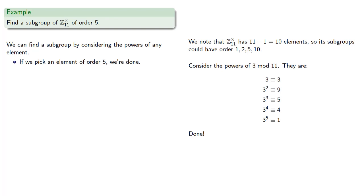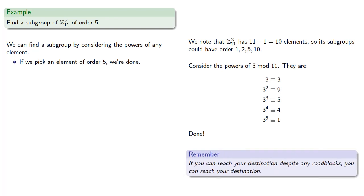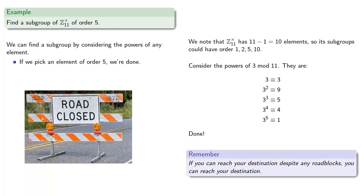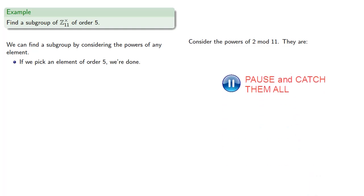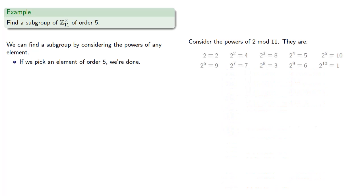But we don't want to rely on being so lucky as to have picked an element of order 5. If you can reach your destination despite any roadblocks, you can reach your destination. So let's put a roadblock: suppose we don't pick an element of order 5. We can form a subgroup by considering powers of any element, so let's consider the powers of 2 mod 11. And we see that the powers of 2 actually generate all of the elements of the group.